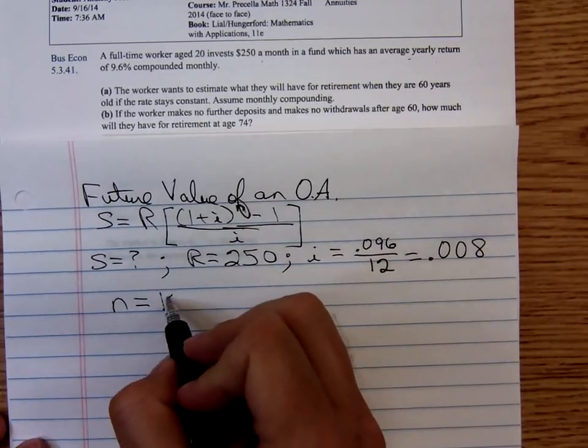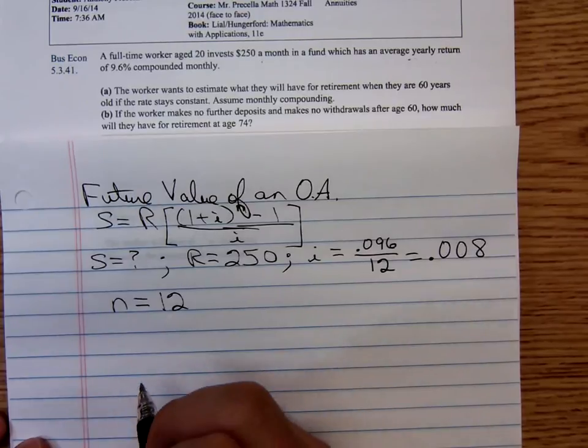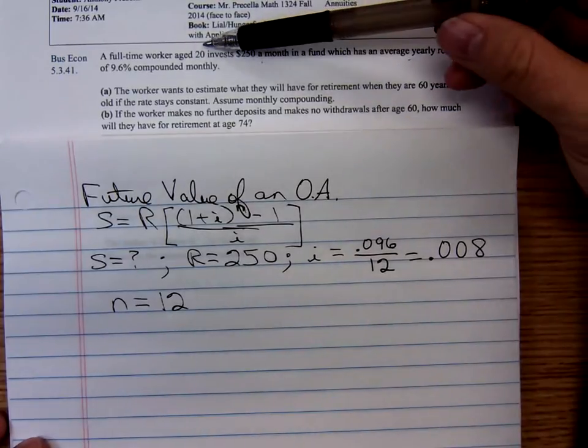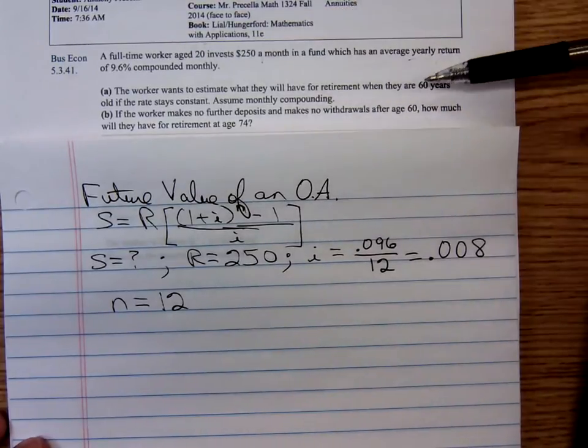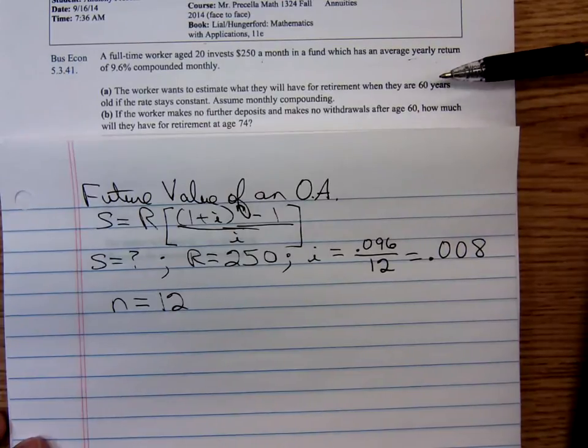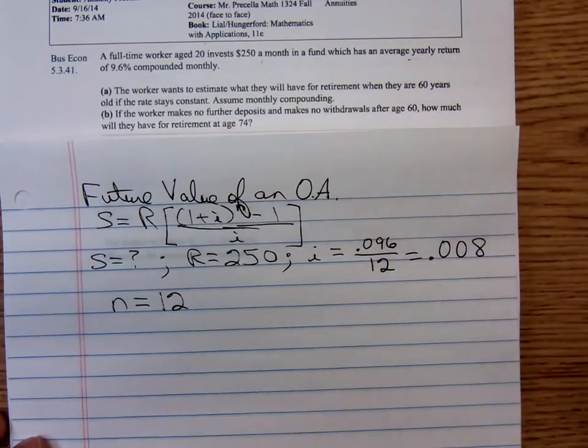This worker is making 12 deposits a year and starts at age 20, keeps going until 60. That's 40 years.